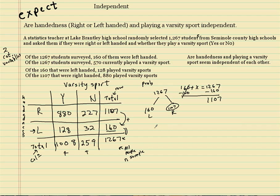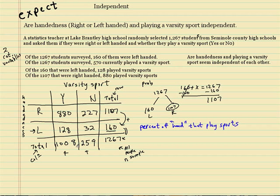Now let's talk about independence. To assess independence, you have to get a conditional distribution. We're interested in the percent of handedness that play sports. I'm going to do it both ways and show you why one is preferred, because people sometimes make the mistake of doing it the wrong way.